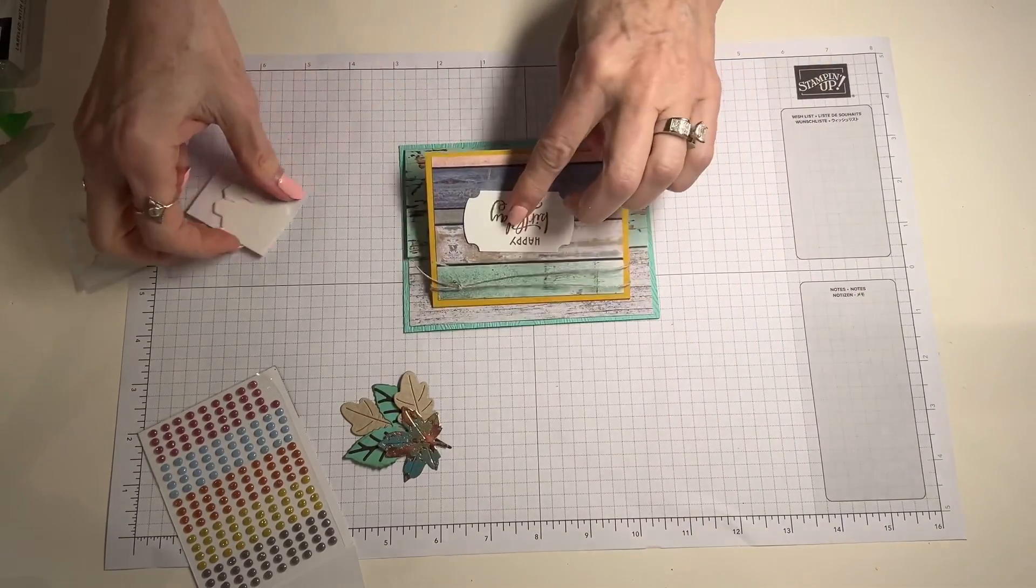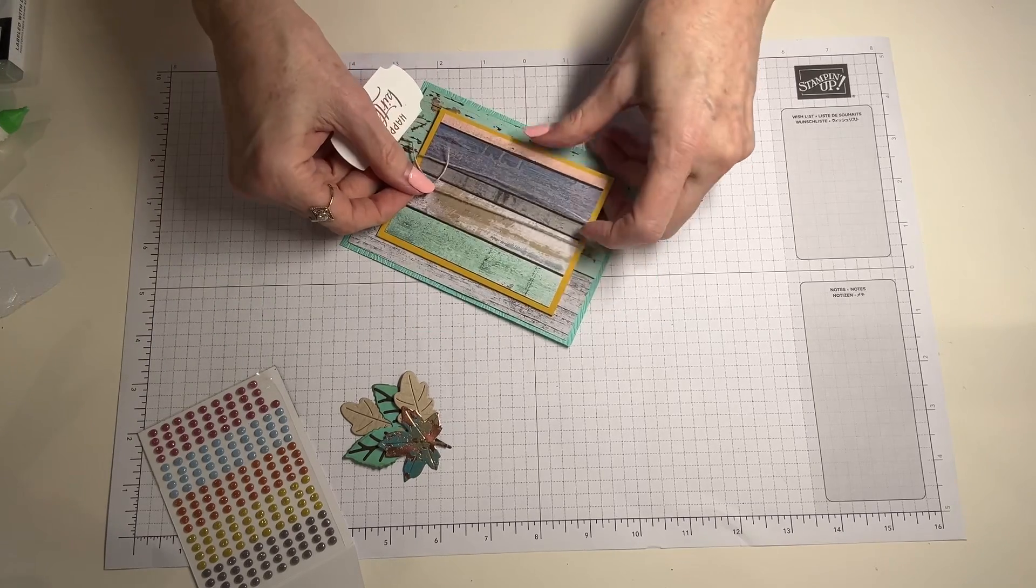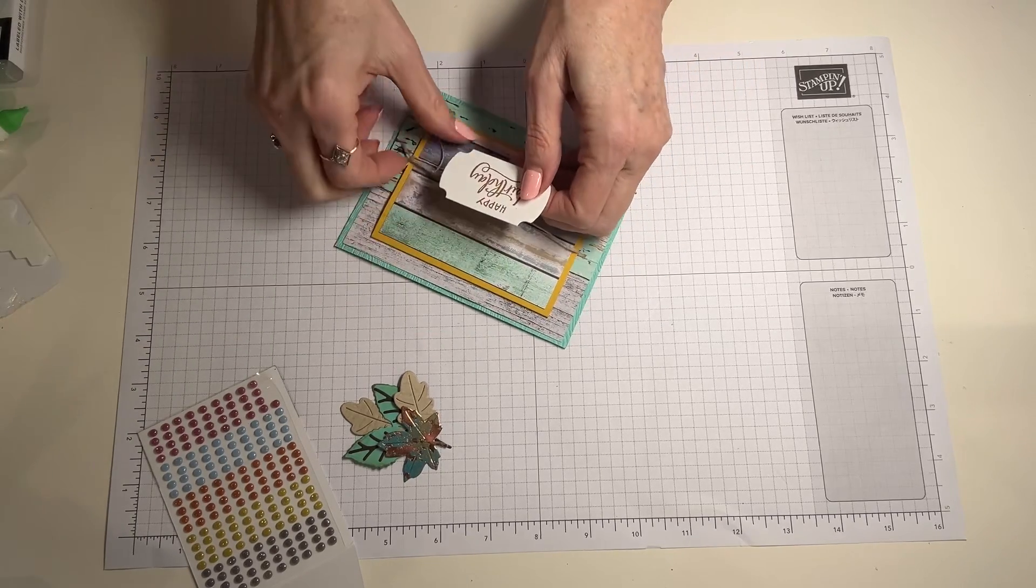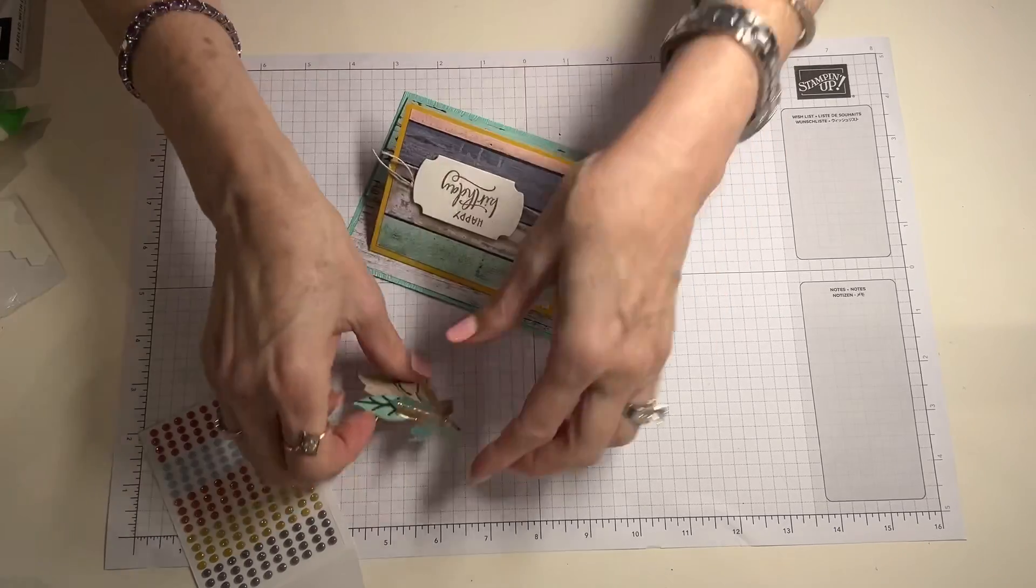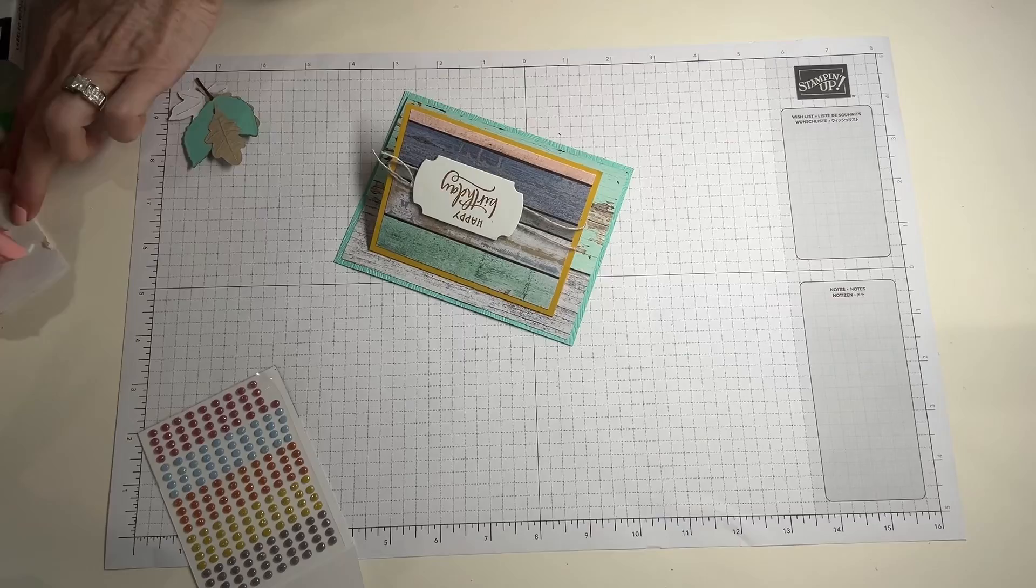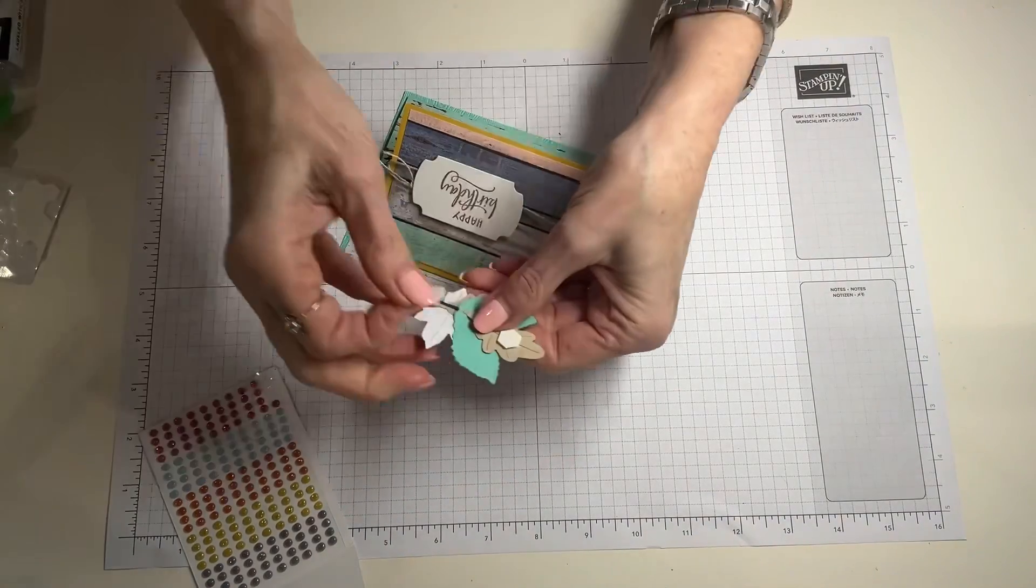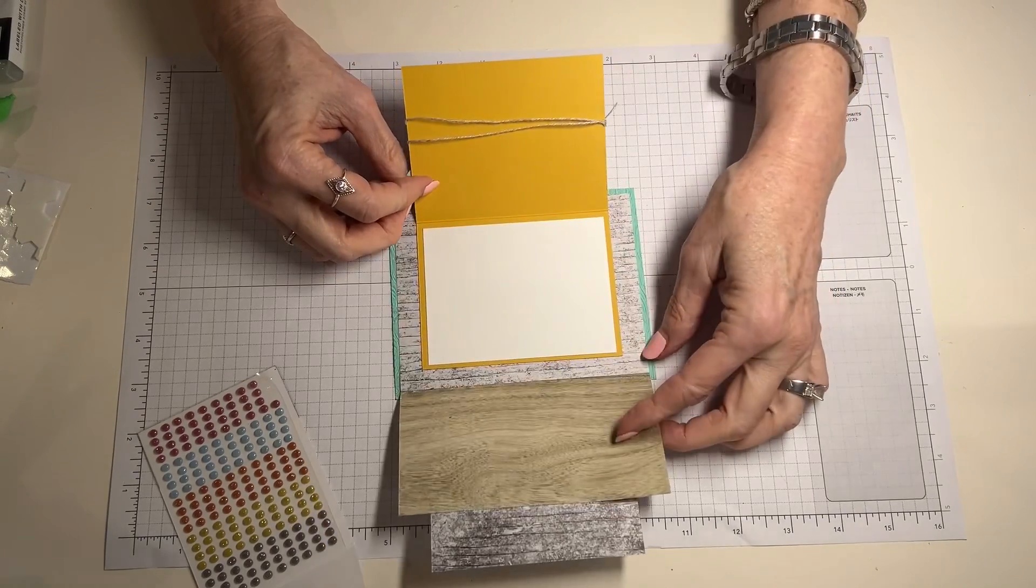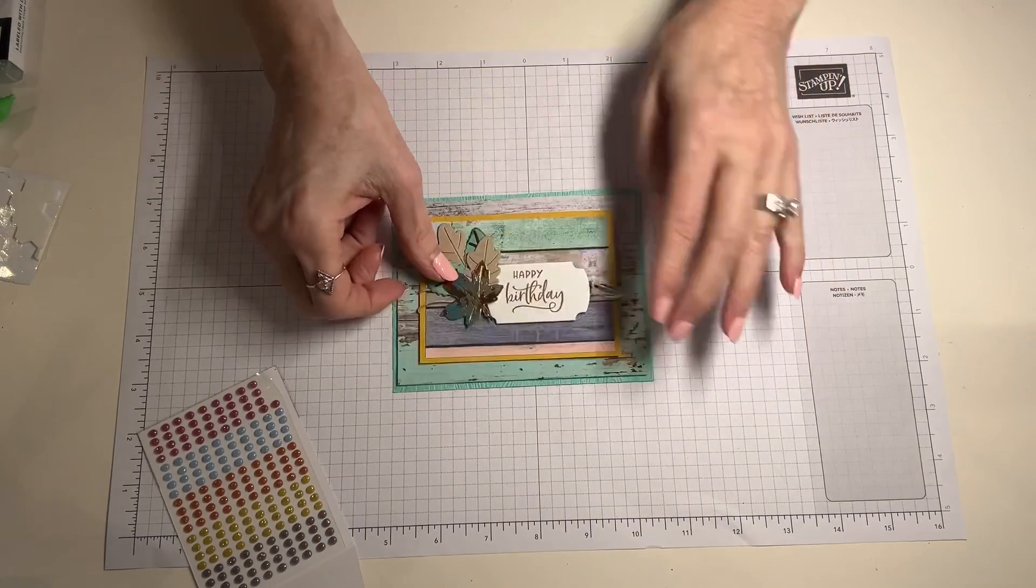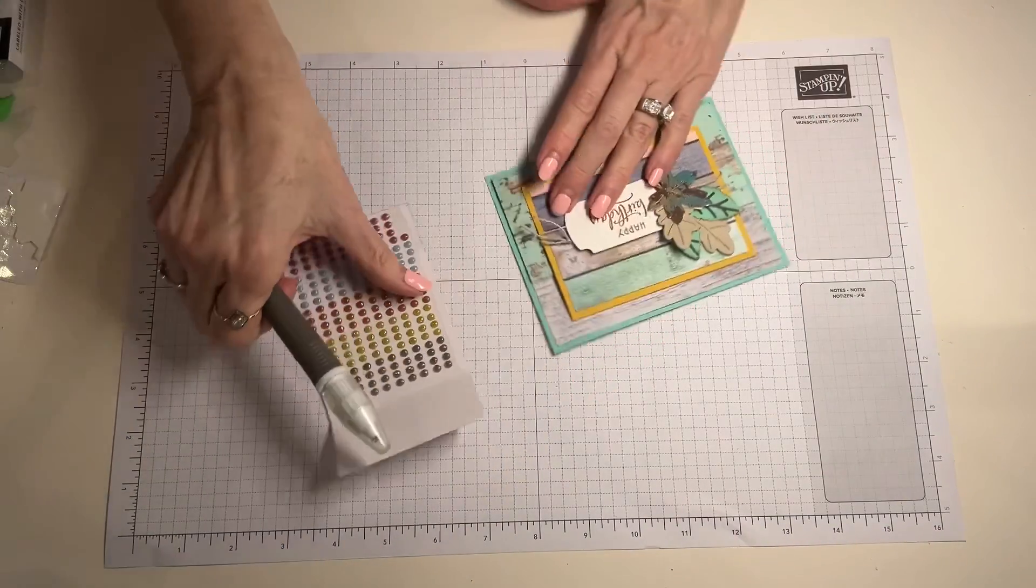Now our happy birthday for the front. Let's go ahead and pop it up with some dimensionals and add my label on top of the string and then let me get a dimensional for... It almost looks like ephemera but it's really just some die cut leaves. We've got our twine, we've got a little bit of extra element by adding that layer, which is an option for you. Let's add some bling and we've got a one and done.